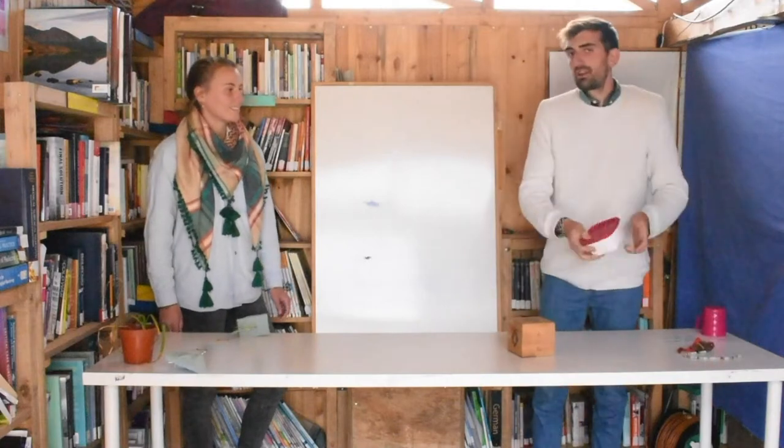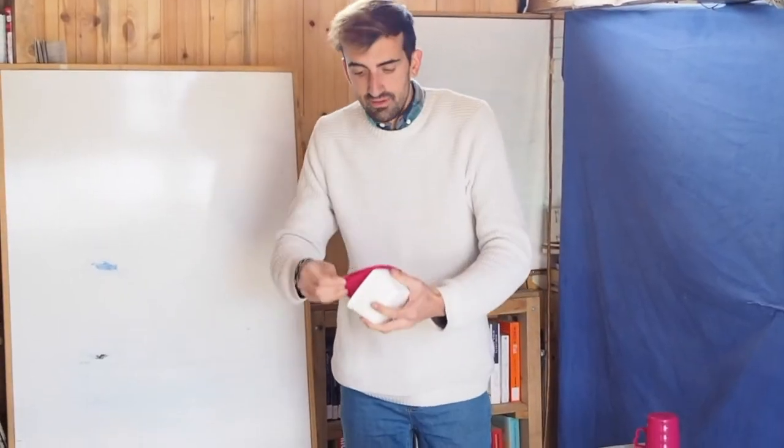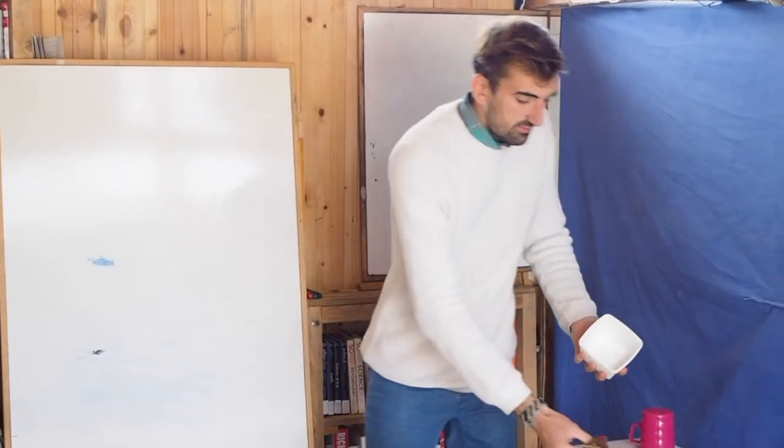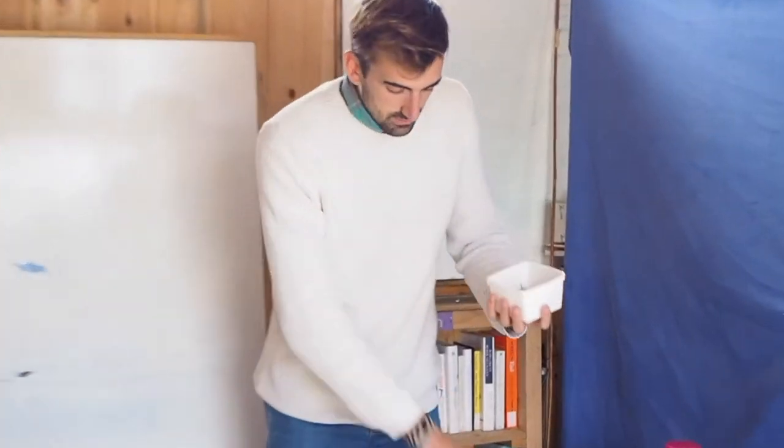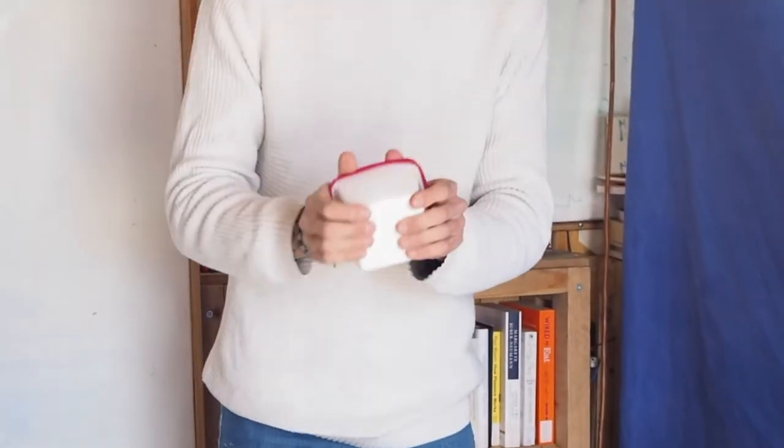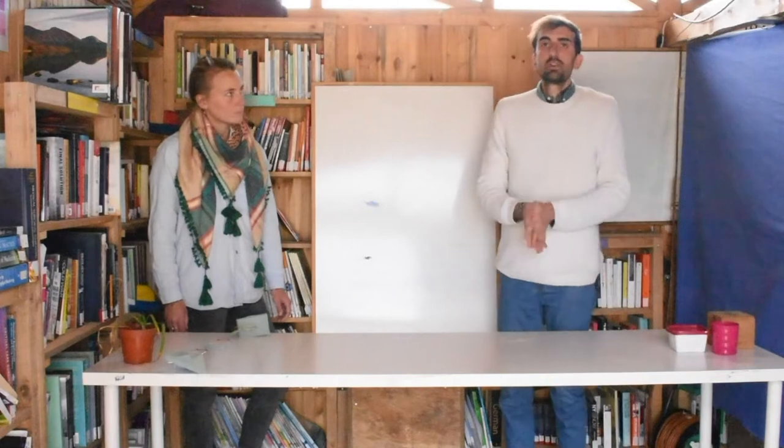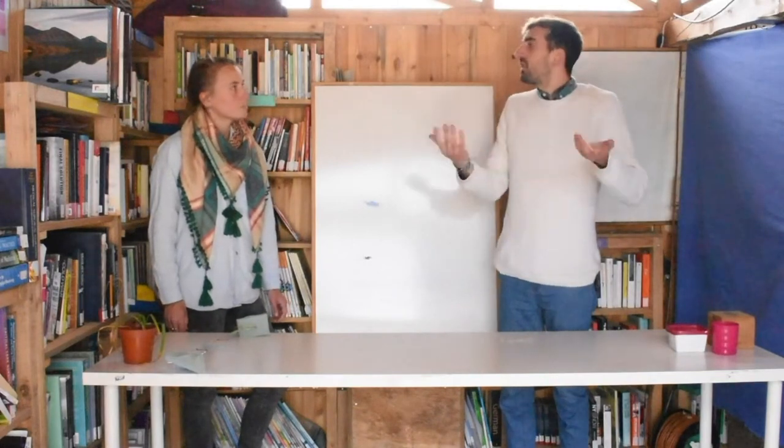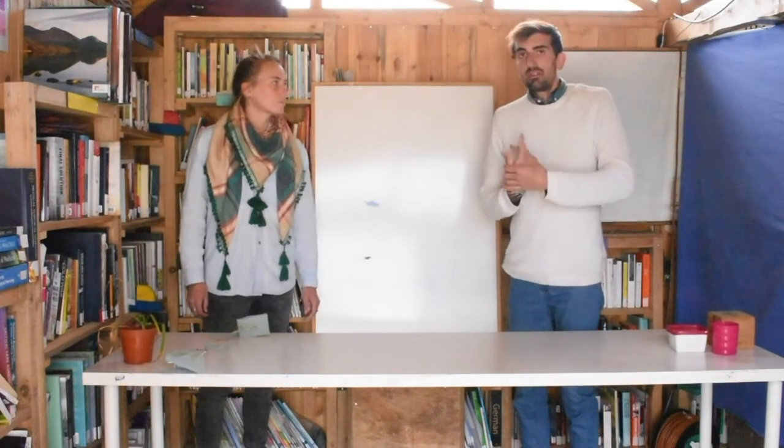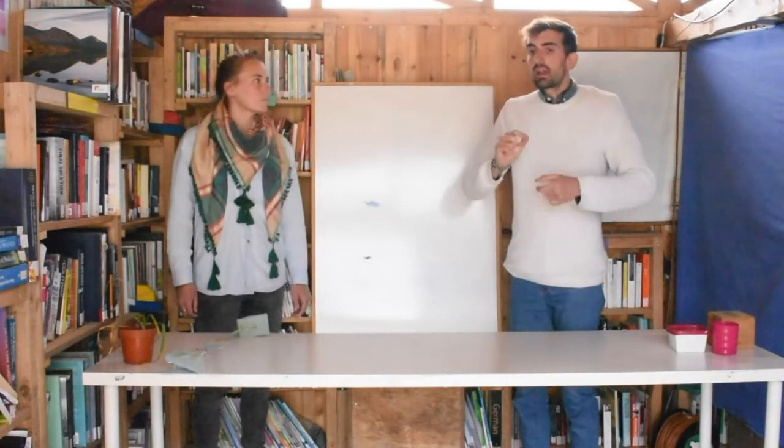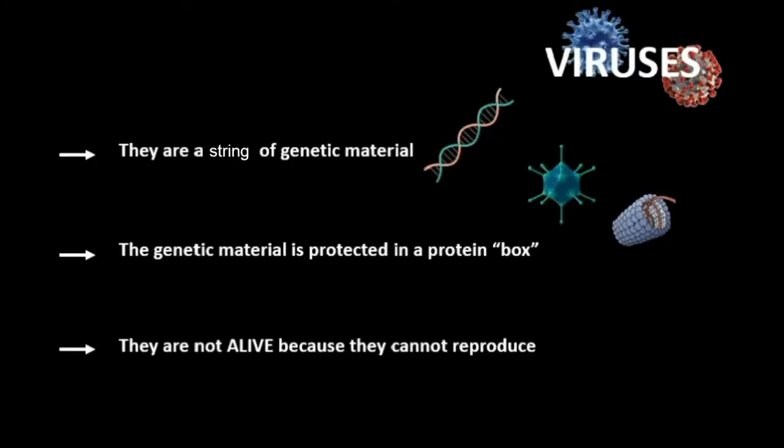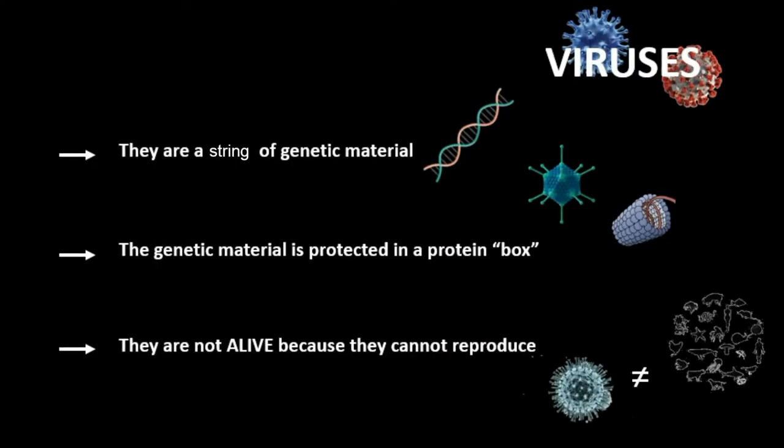We have different kinds of viruses, so we have different kinds of boxes and different kinds of genetic material. So we could imagine, for example, we have three viruses here. So now, why is this different to a bacteria or to us? The main difference is that a virus cannot reproduce. We don't consider them to be alive because they cannot reproduce.